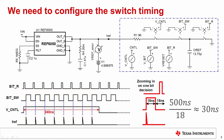Each time the bit switch closes, the CREF capacitor is charged by the reference and its associated filter capacitor. This creates a large current pulse noted IREF. Between each CREF charge cycle, the reset switch is used to reset the capacitor. Note that IREF is the same amplitude each time the bit switch is closed, as CREF is always discharged by the reset switch.